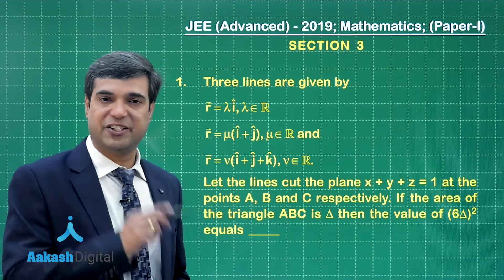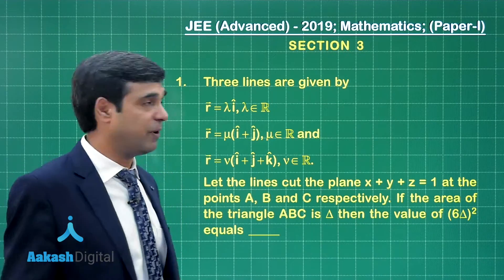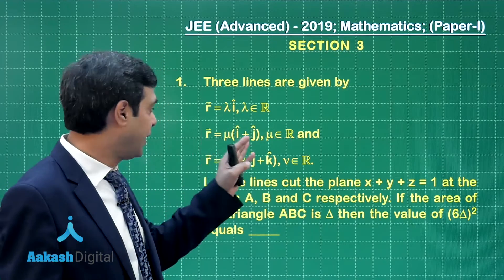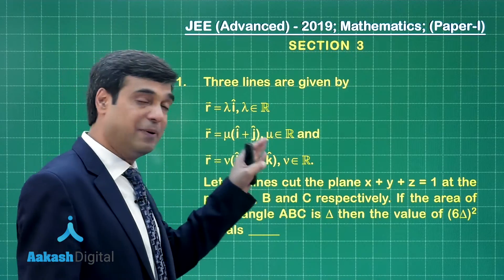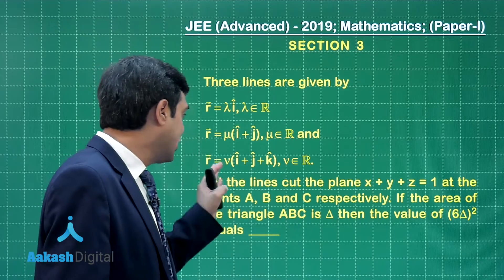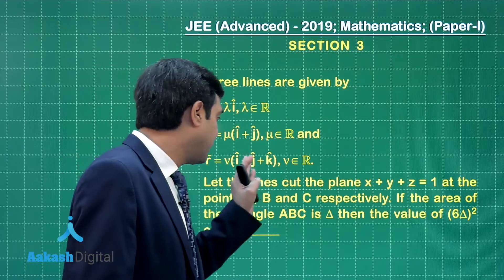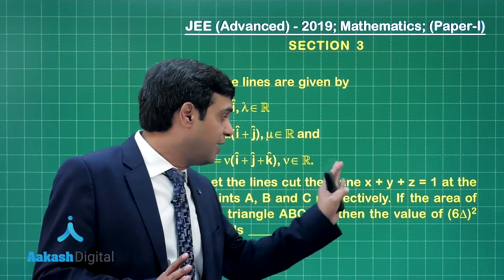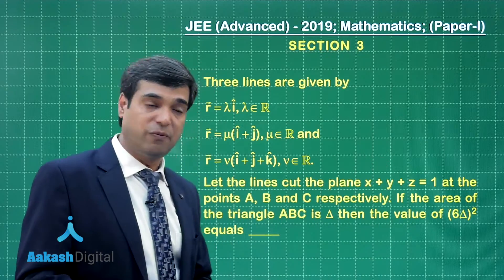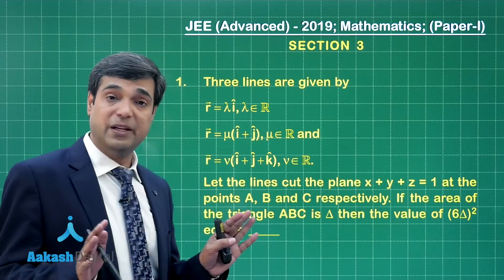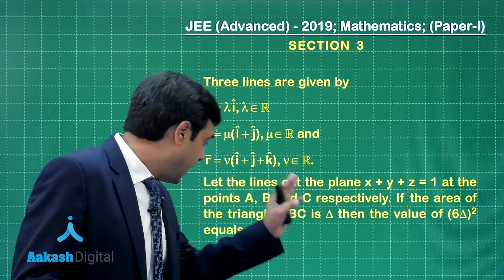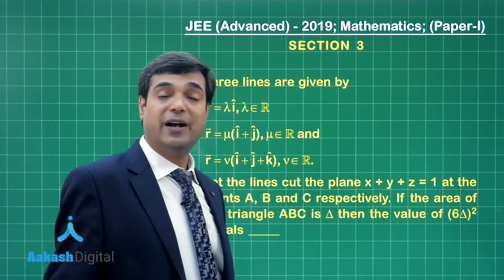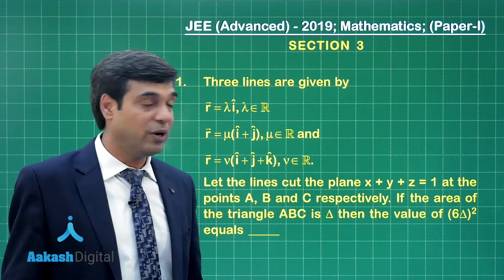Now it's time to take up Section 3, Question 1. Three lines are given by r = λi-cap, r = μ(i + j)-cap, and r = ν(i + j + k)-cap. Let the lines cut the plane x + y + z = 1 at three points A, B, and C. If the area of triangle ABC is delta, find the value of 6δ whole square.